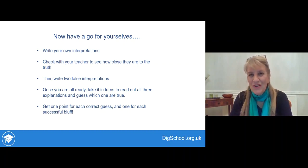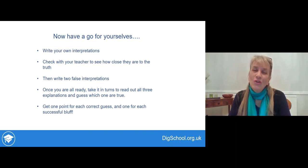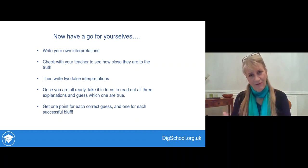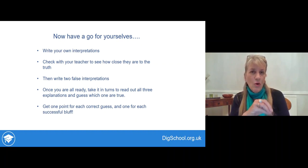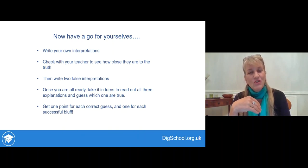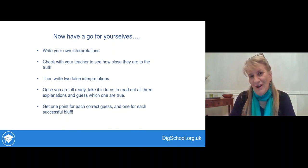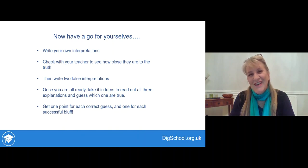Get into teams or work on your own if you prefer. Write your own interpretations looking at the object. The teacher can then show you the correct explanation and you write two false interpretations. If there are several of you in different groups, take it in turns for one group to know what the true explanation is and write the false explanations, while the other groups watch and guess. Once you're all ready, take it in turns to read out all three explanations and guess which ones are true. I'll just show you the pictures for now — you can stop the video at each picture, decide who's going to write the true and false explanations.